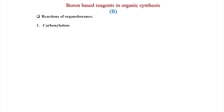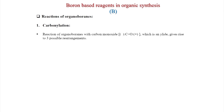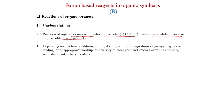Now we will discuss reactions of organoboranes. Various reactions of organoboranes are known because migration is possible — the C-B-R bond allows an alkyl group to migrate to other carbon atoms. Carbonylation reactions of organoboranes with carbon monoxide give rise to three possible rearrangements. Depending on reaction conditions, single, double, and triple migrations of groups may occur, leading after appropriate workup to a variety of aldehydes, ketones, as well as primary, secondary, and tertiary alcohols.